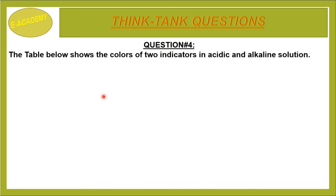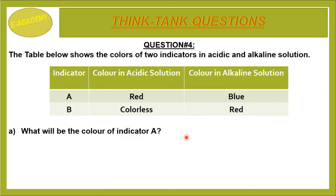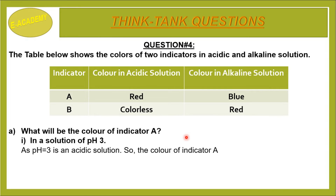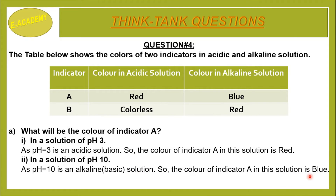Question number 4: the table below shows the colors of two indicators in acidic and alkaline solution. Indicator A: color in acidic solution is red; color in alkaline solution is blue. Indicator B: color in acidic solution is colorless; color in alkaline solution is red. In a solution of pH 3, which is acidic, the color of indicator A is red. In a solution of pH 10, which is alkaline/basic, the color of indicator A is blue.